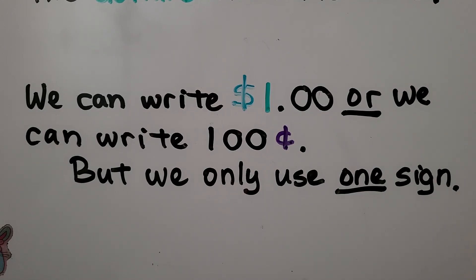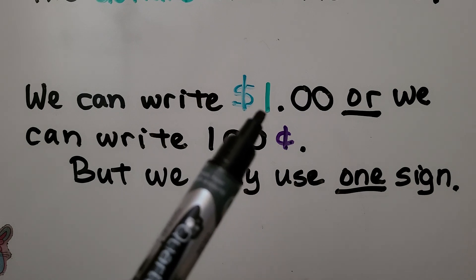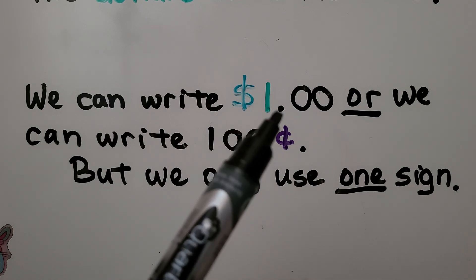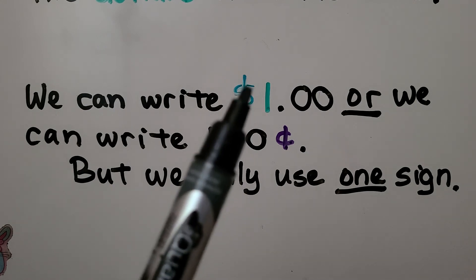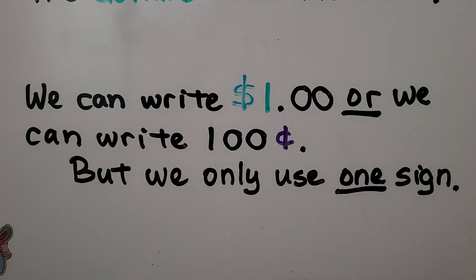We can write one dollar with the dollar sign and our decimal point, or we can write 100 cents with the cents sign. But we only use one sign — we wouldn't put them together. We would either write it with the dollar sign or with the cents sign. You don't use both.